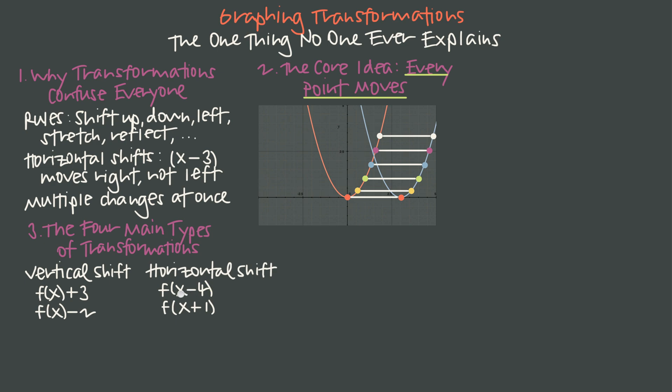This horizontal shift where we change x to x minus 4, and again, remember that this feels backwards, moves the graph four units to the right, even though we have subtraction. When we have addition and we add one here, replacing x with x plus 1, that means the graph is going to shift one unit to the left. So we have to remember, horizontal shifts always feel backwards.